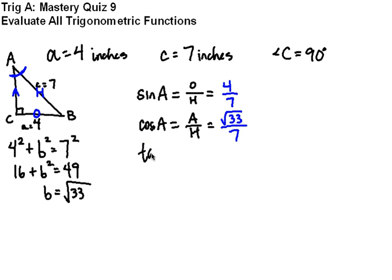Tangent of A, the tangent in SOHCAHTOA is opposite over adjacent. Opposite angle A is 4, and adjacent angle A is the square root of 33.